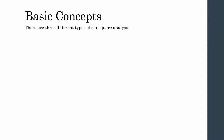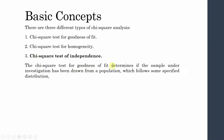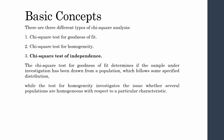There are three different types of chi-square analysis. The chi-square test for goodness of fit determines if the sample has been drawn from a population which follows some specified distribution. The chi-square test for homogeneity investigates whether several populations are homogeneous with respect to a particular characteristic. These two tests are not very common.